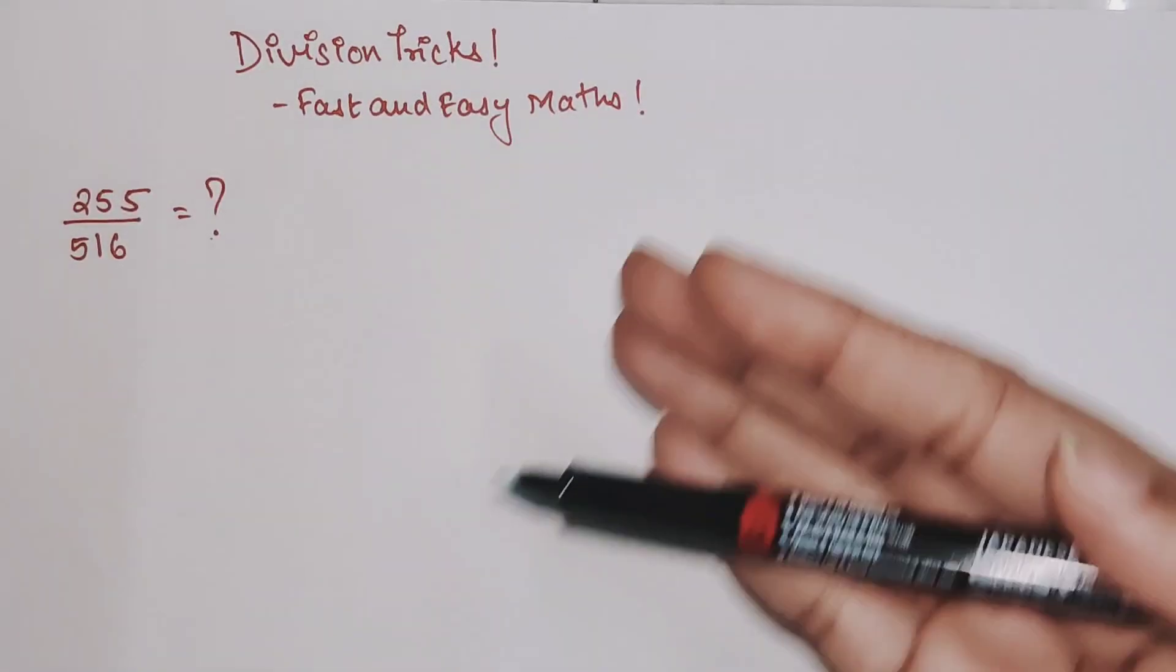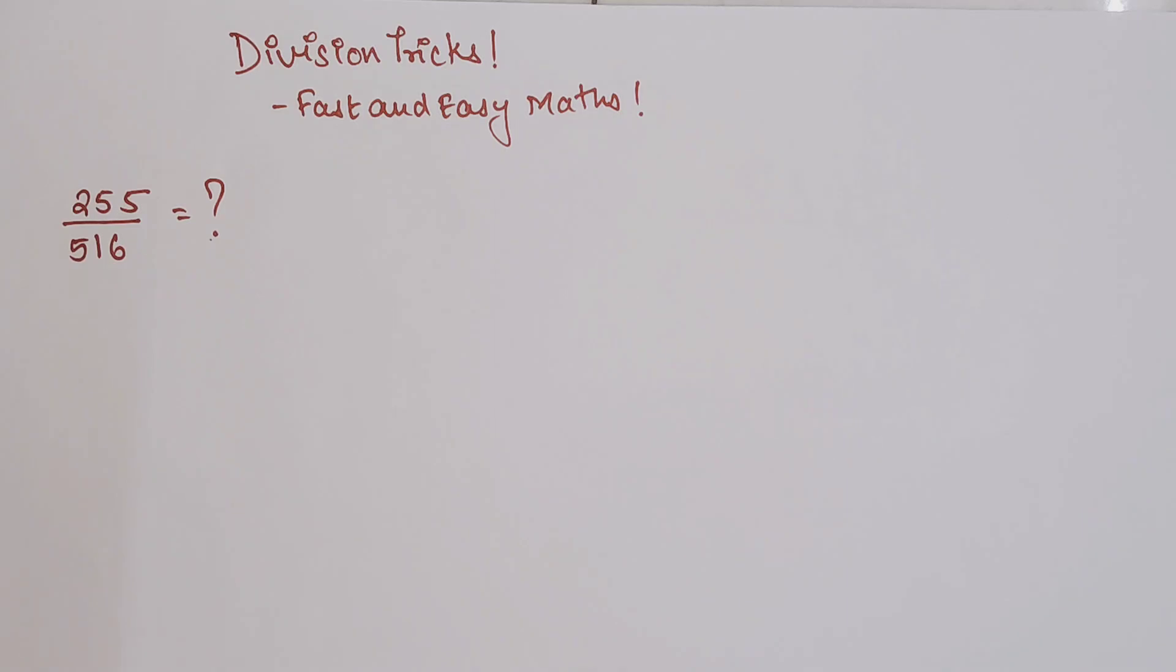Apart from that, the entire calculation is very lengthy, and the worst part is the options are given very close by, so you can't even nullify from your options. So what to do when you come across something like this?